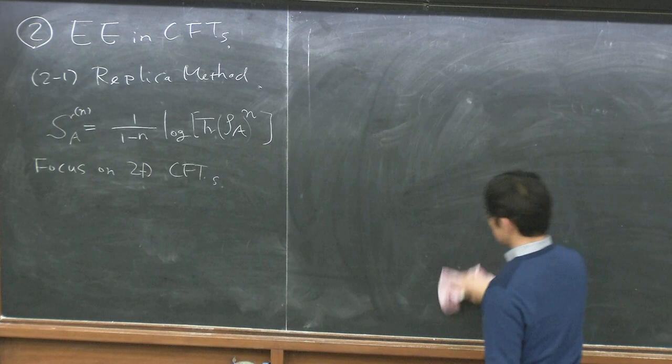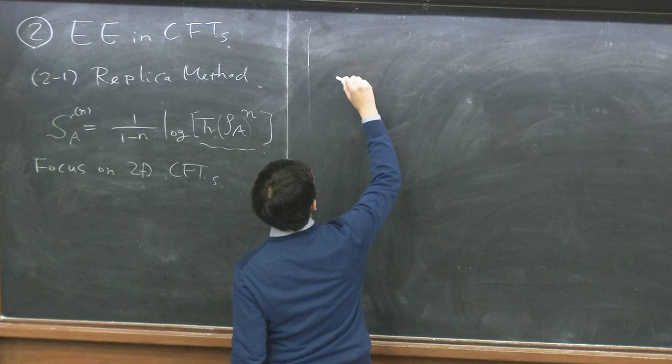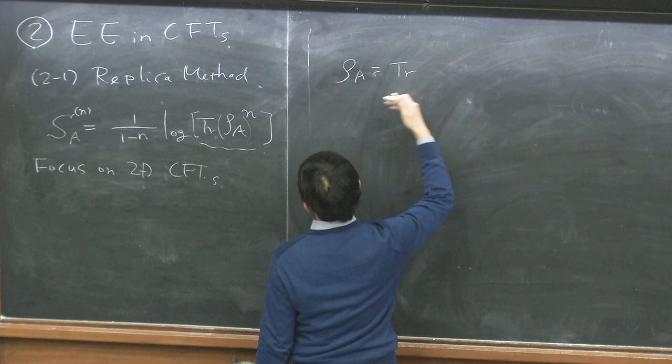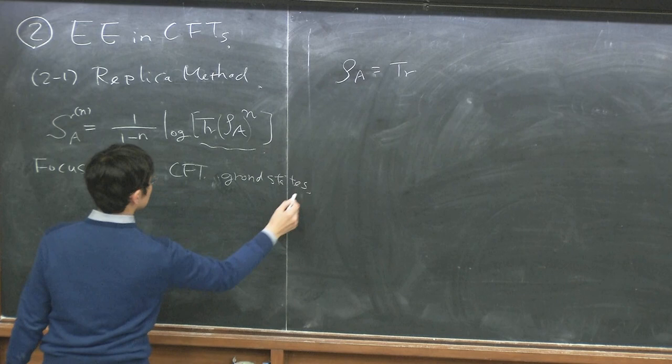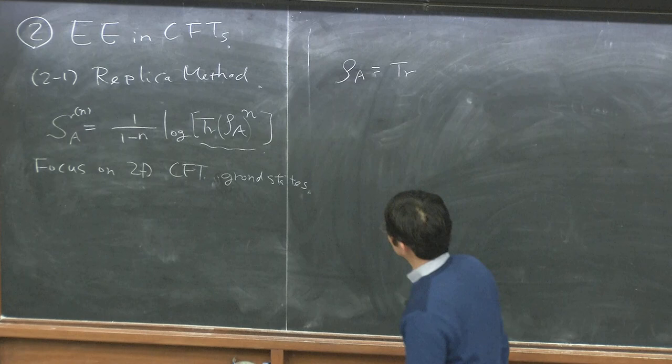We can compute this in a path integral formula. First, we calculate ρ_A. Let's assume a 2D CFT ground state — you can easily generalize to excited states, which I'll come back to tomorrow. The ground state wave function in quantum field theory is given by a Euclidean path integral from τ = −∞ to τ = 0. This projects down to the ground state because the evolution operator e^{−βH} with β → ∞ projects any boundary condition to the ground state.